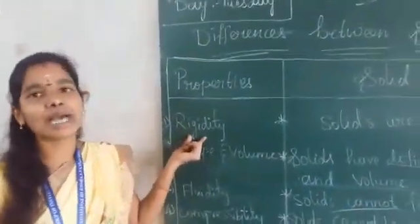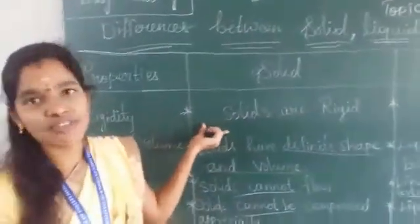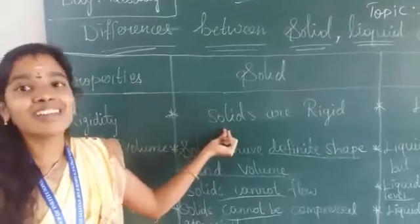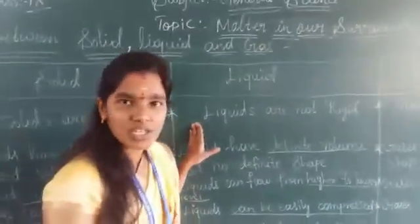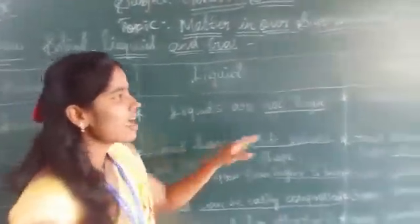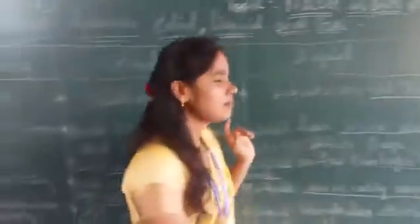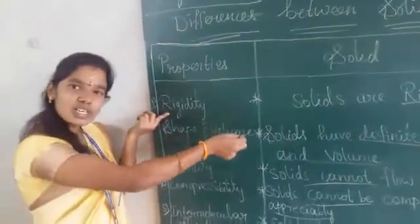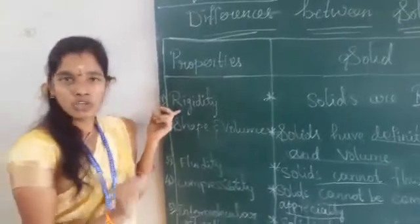The first property is rigidity, meaning incapable of bending. Solids are rigid — you cannot bend a solid. Liquids are not rigid, and gases are also not rigid.